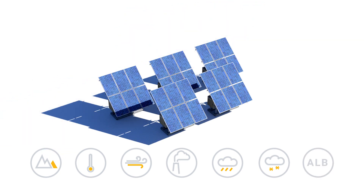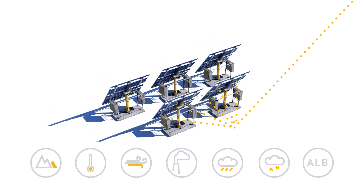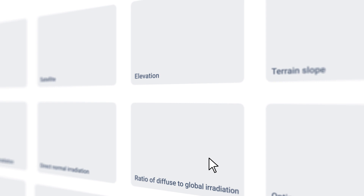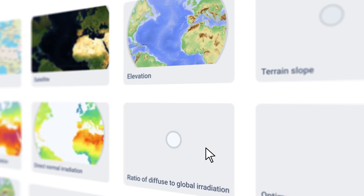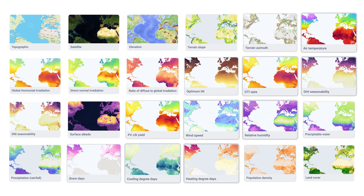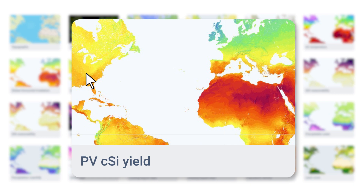Albedo, which determines the amount of solar radiation reflected from the surface to the back of PV panels, is another critical factor. Solage's Prospect will give you access to 24 interactive map layers, which are vital for a project assessment.